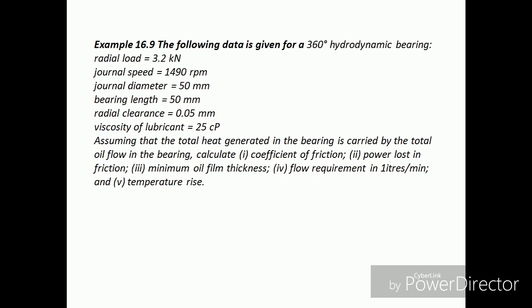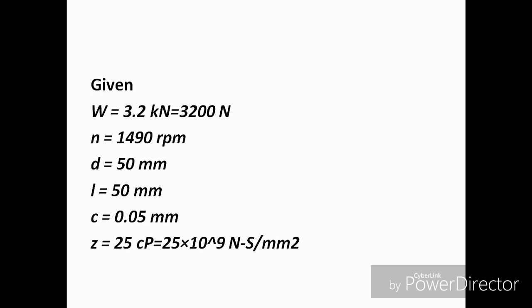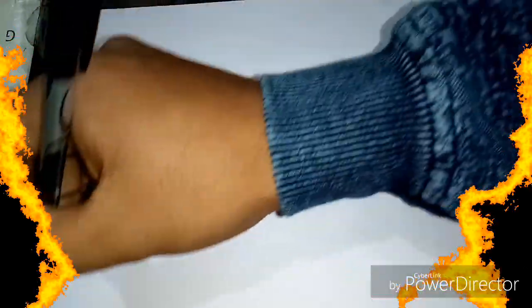Assuming that the total heat generated in the bearing is carried by the total oil flow in the bearing, we have to calculate: coefficient of friction, power lost in friction, minimum oil film thickness, flow requirement in liter per minute, and temperature rise. Here we have the given data: load is 3200 Newton, speed in rpm, diameter, length, clearance C, and centipoise.